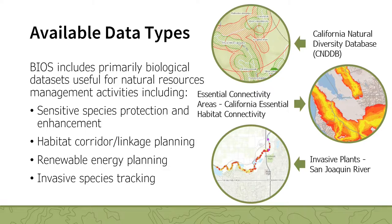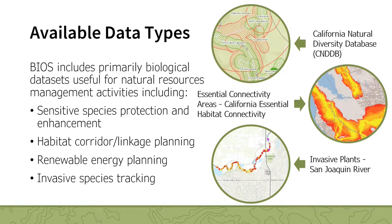BIOS includes primarily biological datasets useful for natural resource management activities. These include sensitive species protection and enhancement such as the CNDDB, fish ranges from the National Oceanic and Atmospheric Administration, and terrestrial species critical habitats from the U.S. Fish and Wildlife Service. Additional categories include species connectivity modeling such as habitat corridor and linkage planning, renewable energy planning as seen in the Desert Renewable Conservation Plan viewer, invasive species tracking, regional data such as invasive plants in the San Joaquin River, and supporting data such as water quality readings and wind turbine data for analyzing bird strikes.